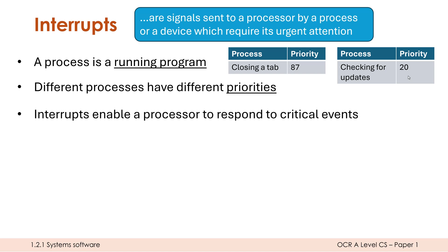An interrupt is there to enable a processor to respond to critical events, and it will be either a CPU or GPU reacting to these interrupts. Because in life things happen and we have to change our plans — interrupts enable this. Each interrupt also has a priority. There are loads of different interrupts, not all equally important; they each have their own priority. A shutdown interrupt might be our biggest priority, but not all interrupts are quite as critical.